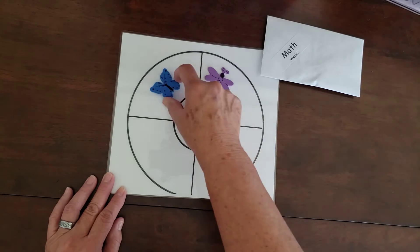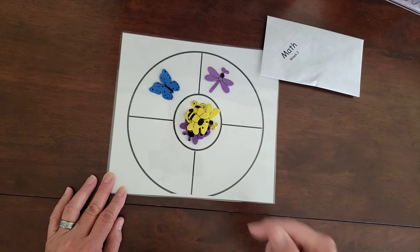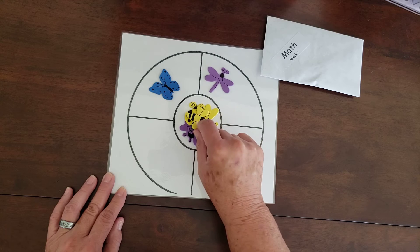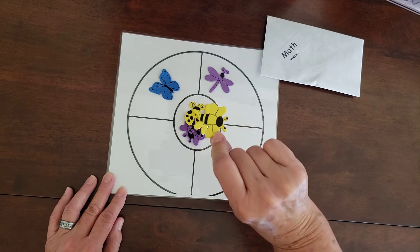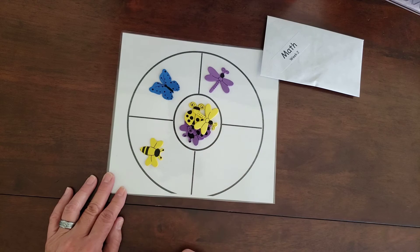That one's different than that one, so I'm going to put him over here. And once I put them, I can always go back and move them if I find a better way of doing it. This one is a yellow bee. That's different than those, so I'm going to put that one over there.